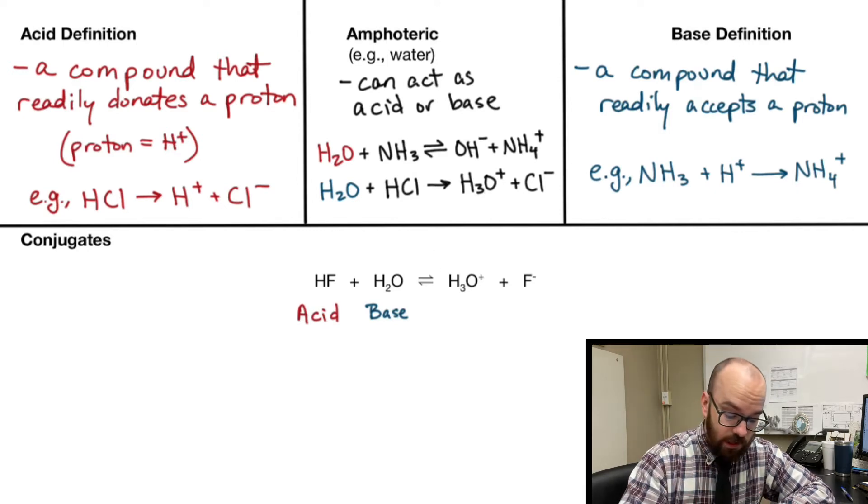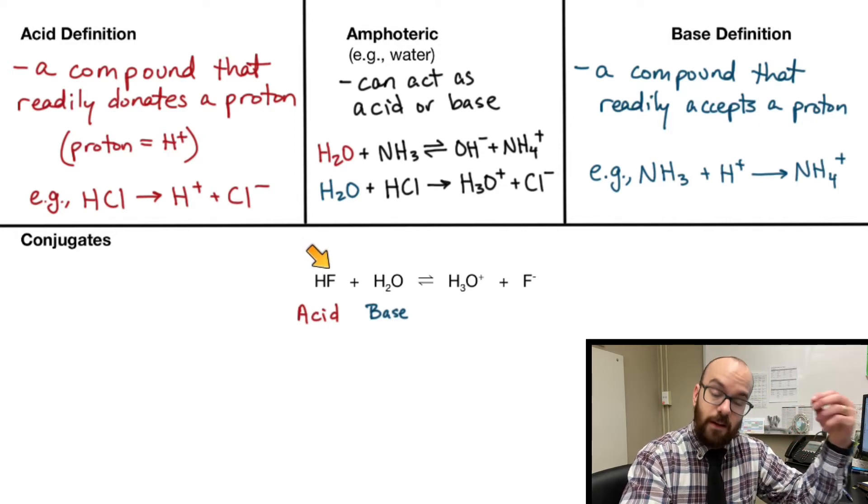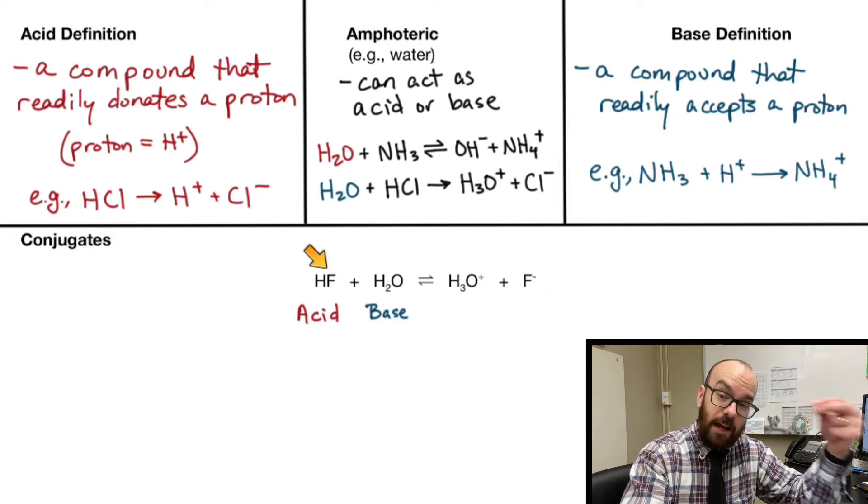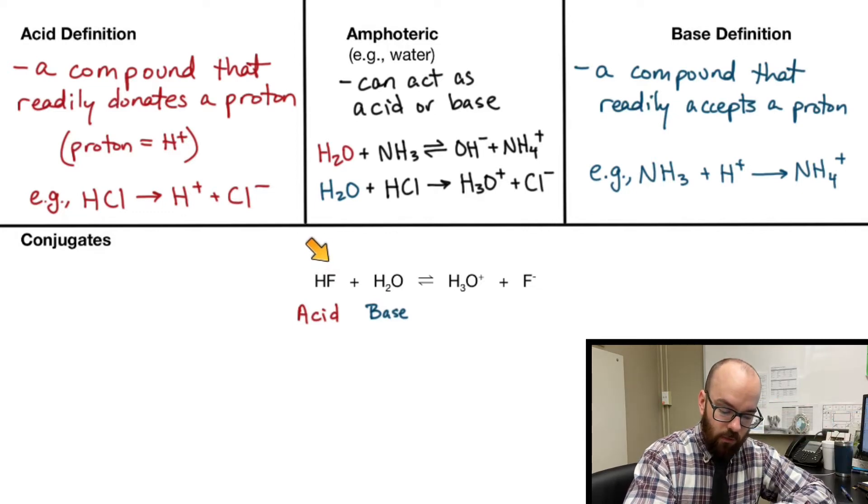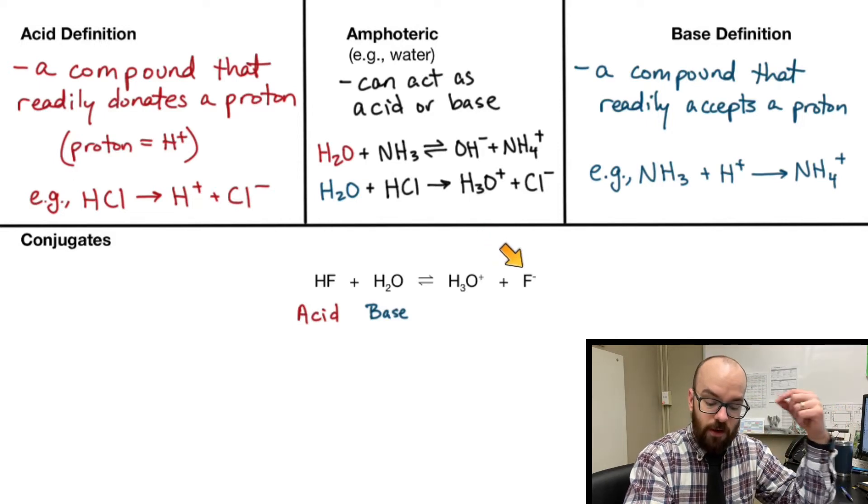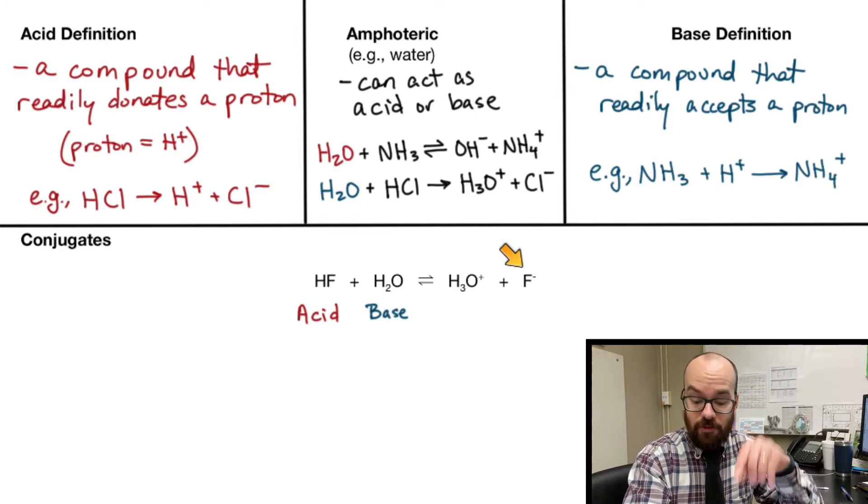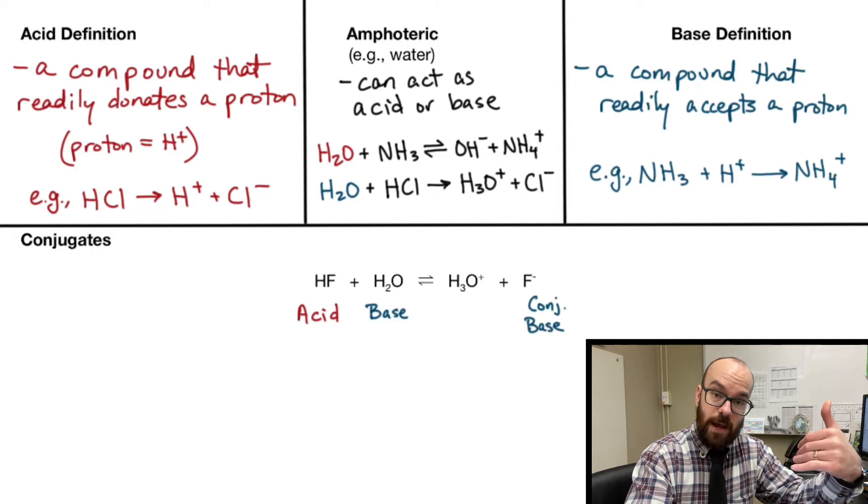Now, to identify the conjugates here, all you have to do is take the acid and find the species on the other side of the reaction that's the same thing but with the hydrogen removed. So I'm going to look over on the other side, and my F- is the same thing, but it just had that hydrogen pulled off of it. So that's now going to be the conjugate base. The thing that looks like the acid without the hydrogen, that's actually the conjugate base.